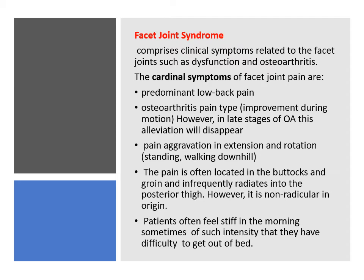The spondylotic changes that affect the facet joint in the lumbar spine will result in what we call facet joint syndrome. In this syndrome, the pain will be predominantly in the lower back and is usually improved during motion. The pain will be aggravated by extension and rotation, and the pain is often located in the buttock and groin, may radiate to the posterior thigh, but it is of a non-radicular origin. Usually the patient will feel stiff when waking in the morning.